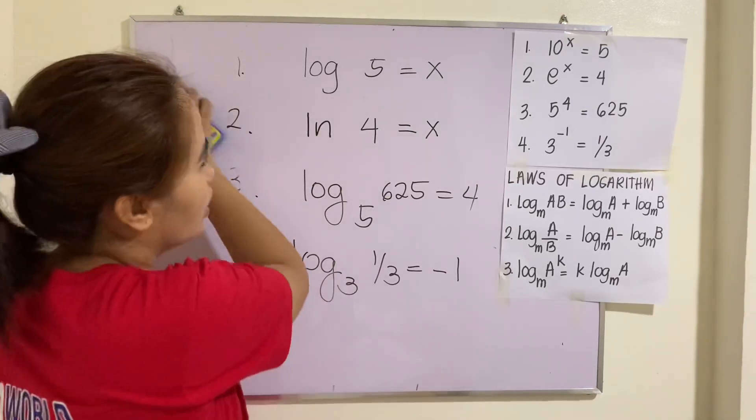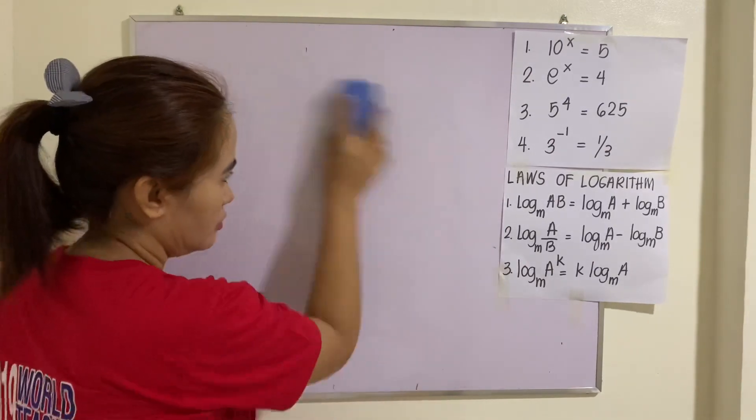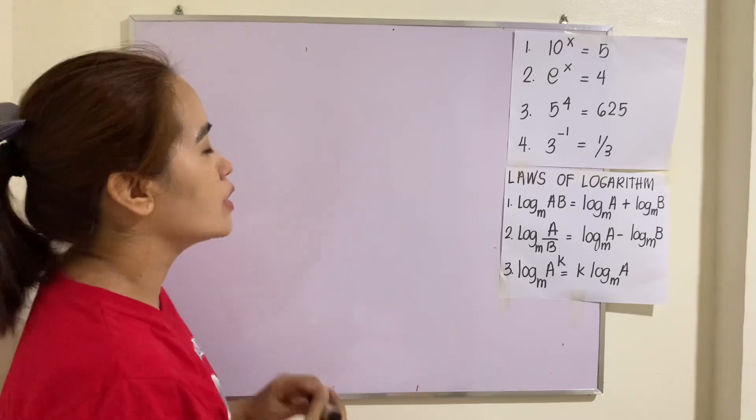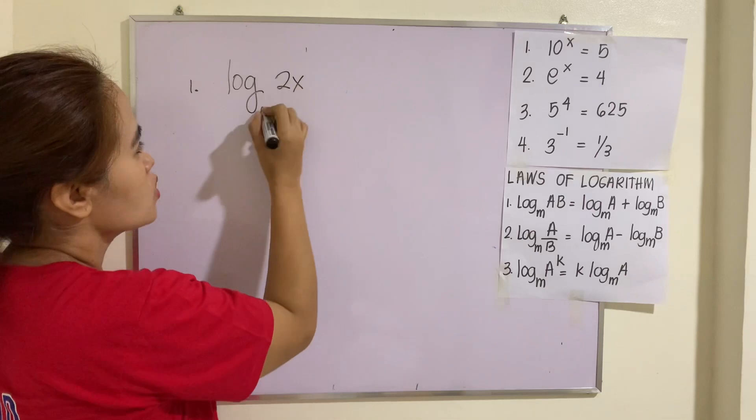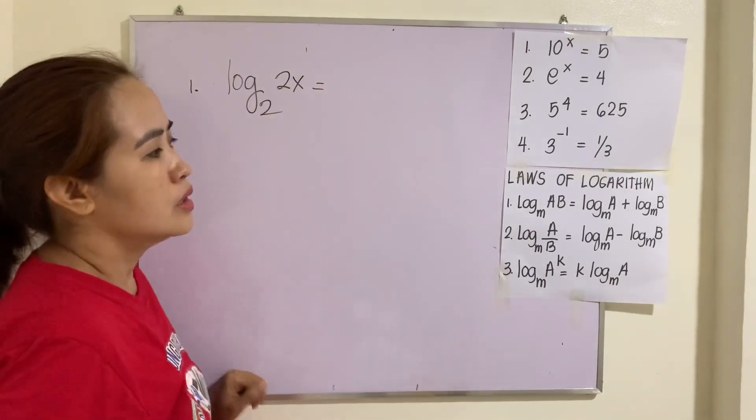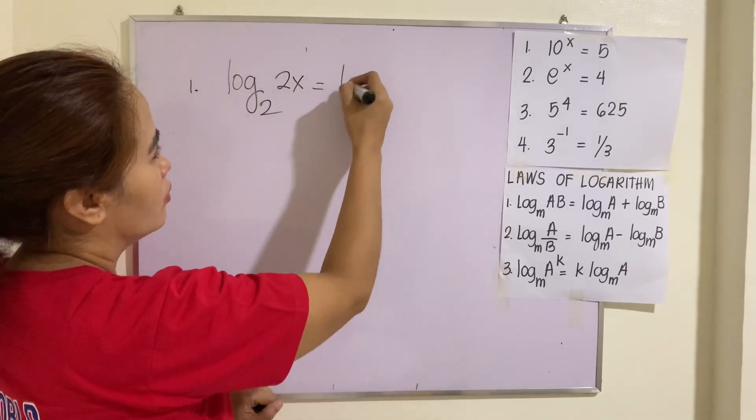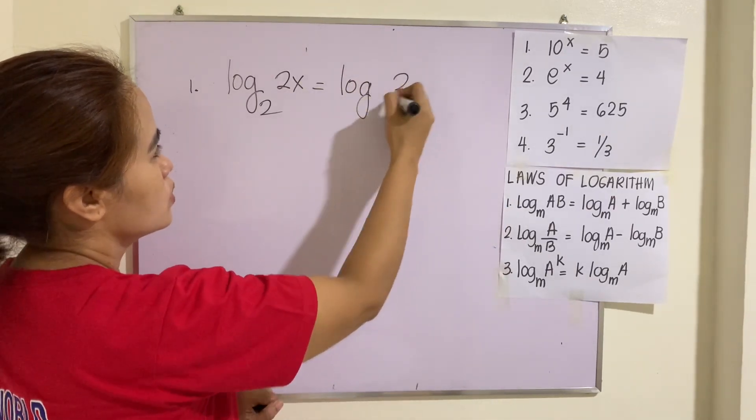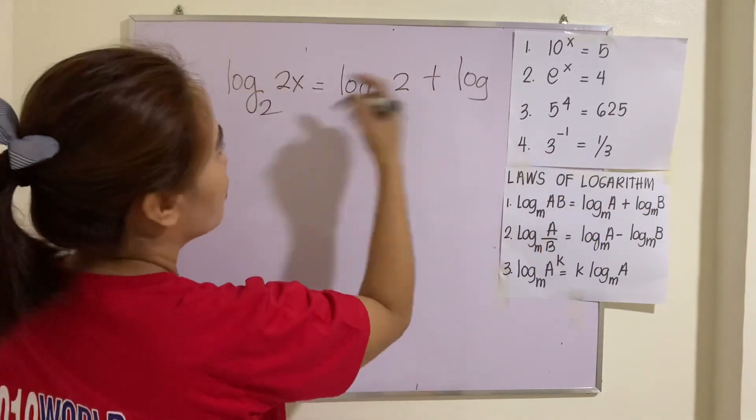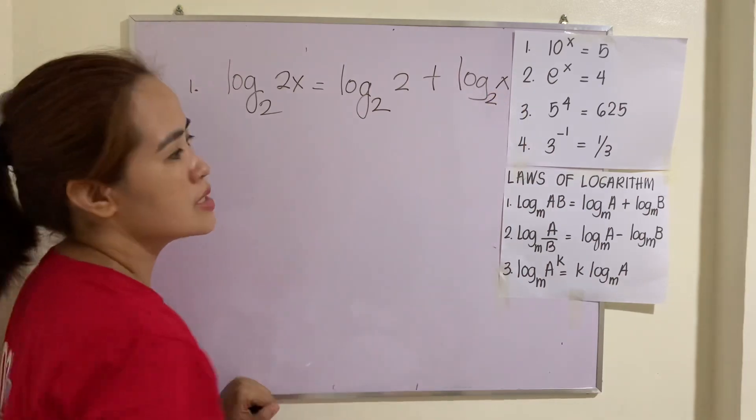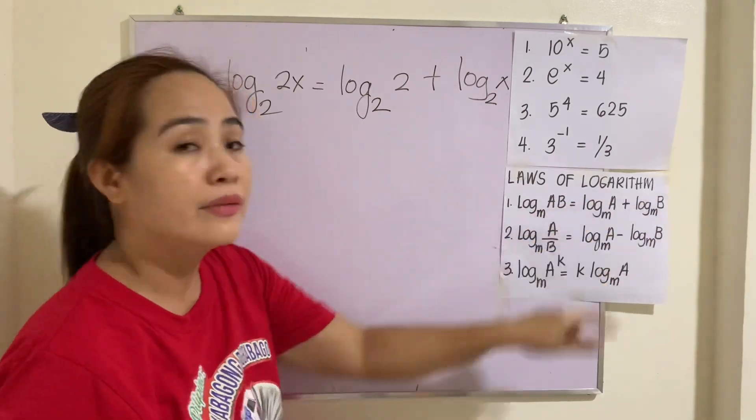Now, there are three laws of logarithms that are to be considered. The first one is what we call the logarithm of a product. Now, suppose you have log_2(2x). This one can be written as using the first law of logarithm. This is log_2(2) + log_2(x). That's it. So, meaning if it is a product, you get the factors and add them.